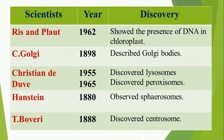Ris and Plaut in 1962 showed the presence of DNA in chloroplasts. It was Camillo Golgi in 1898 who described Golgi bodies. Christian de Duve in 1955 discovered lysosomes and in 1965 discovered peroxisomes. It was Hanstein who observed the spherosome in 1880, and Boveri discovered the centrosome in 1888.